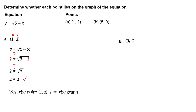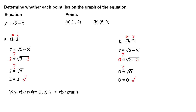Part b: Does the point lie on the graph of the equation? First, write the equation y equals the square root of the quantity 5 minus x. Next, substitute 5 for x and 0 for y. Does 0 equal the square root of the quantity 5 minus 5? Simplify: does 0 equal the square root of 0? Simplify further to get 0 equals 0, which is a true statement. Yes, the point is on the graph.